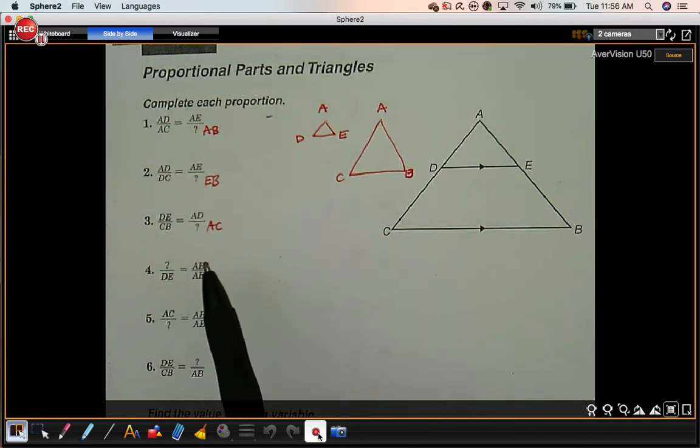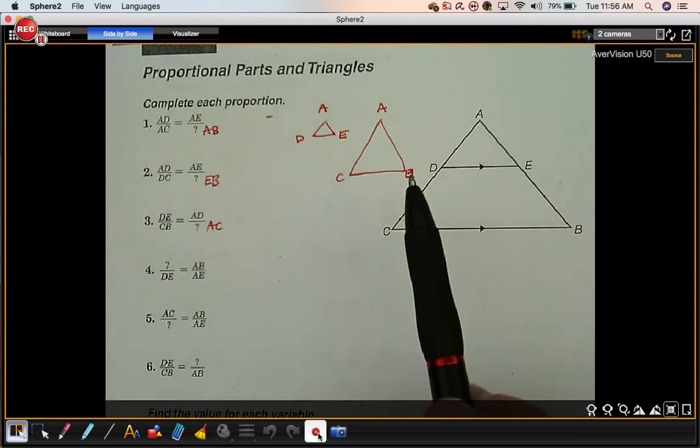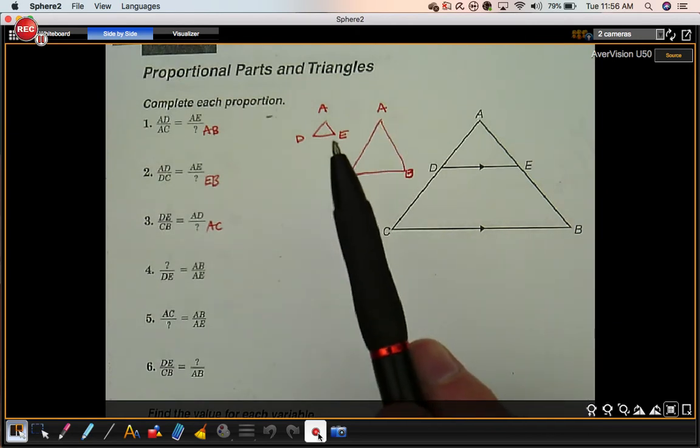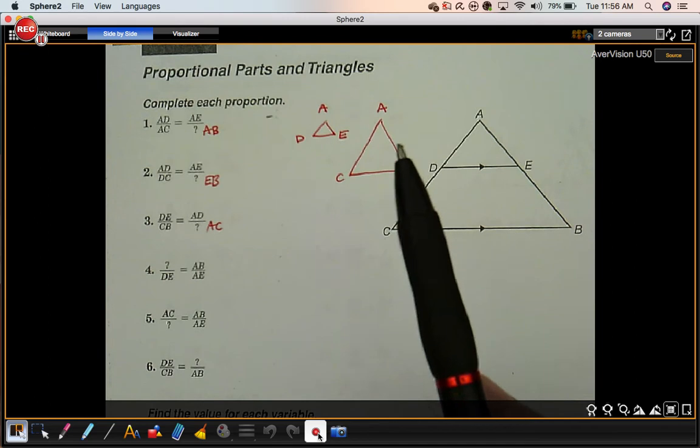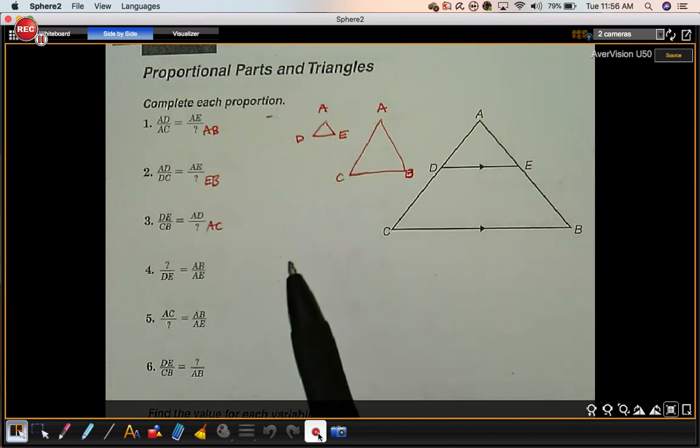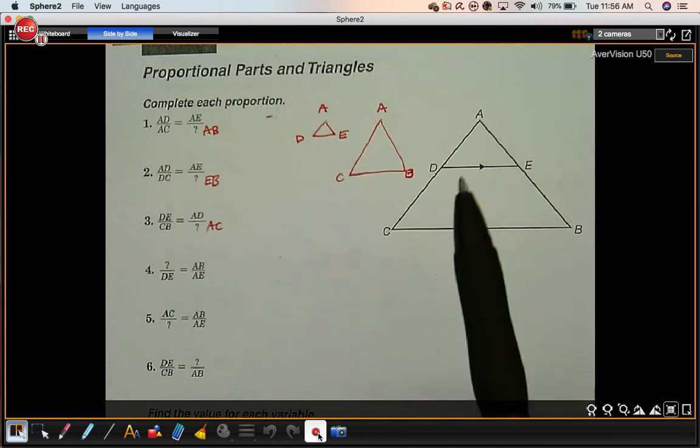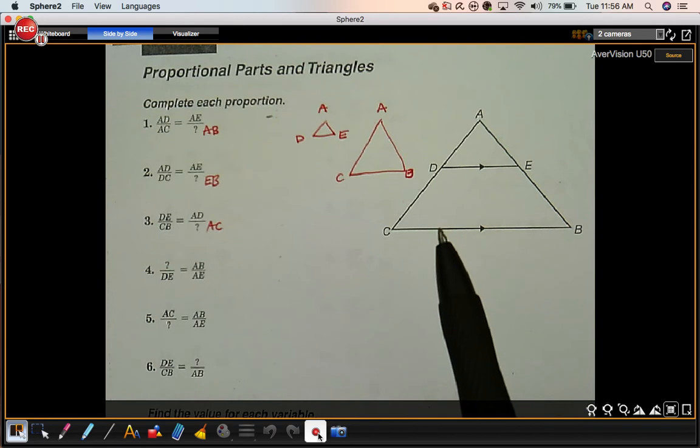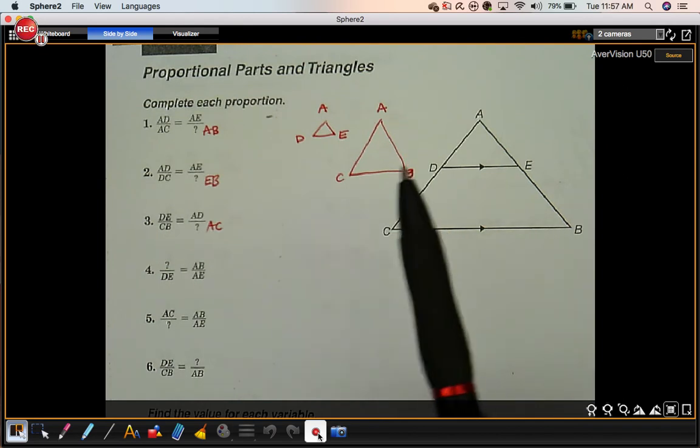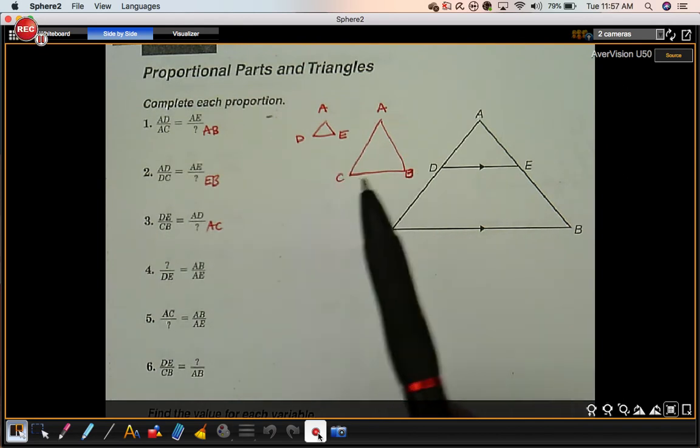Number 4. We have segment AB. That's the right side, compared with segment AE. That's the right side. Right side to right side equals something over DE. It's going to be the bottom. This guy was the bottom, so this will be the bottom too.